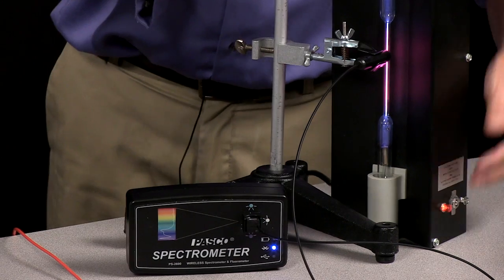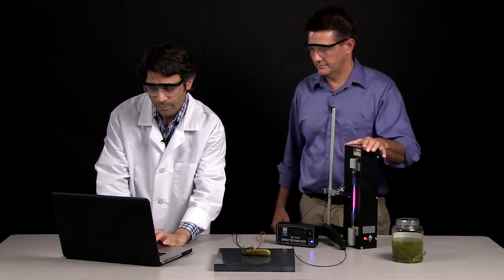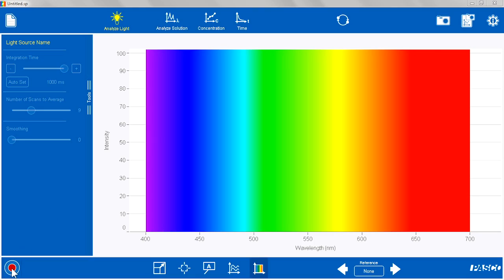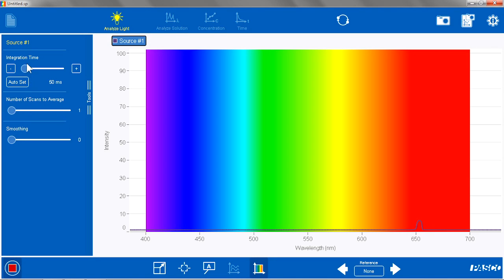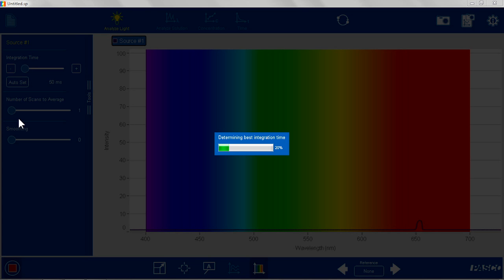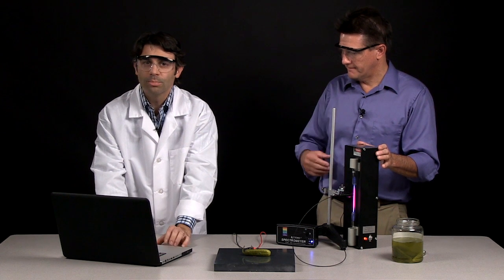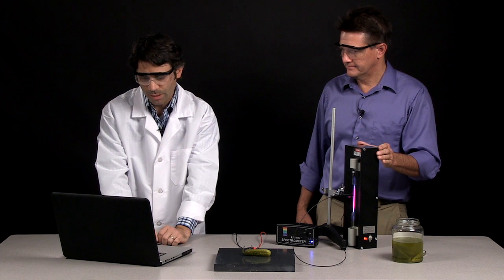So to demonstrate how that works, first we're going to look at a hydrogen tube. So now that Ron's turned it on, I'm just going to hit start. I'm going to auto set the integration time and that lets the maximum amount of light in so that we can get a good spectra.